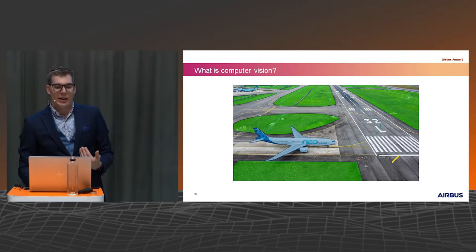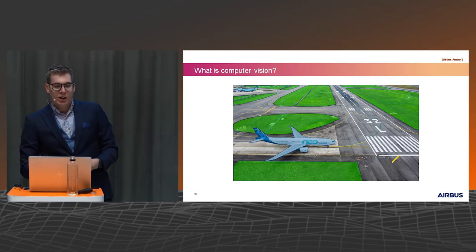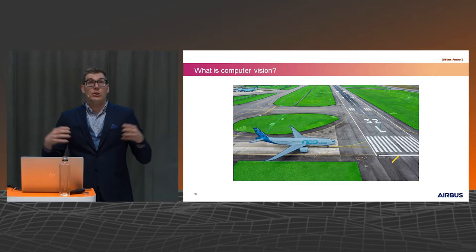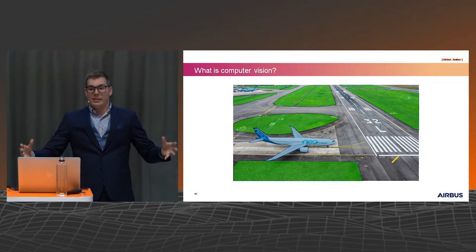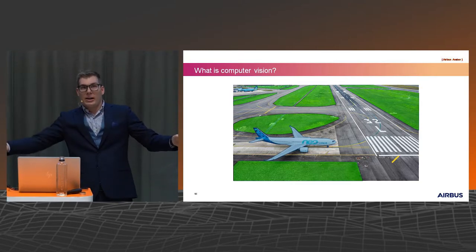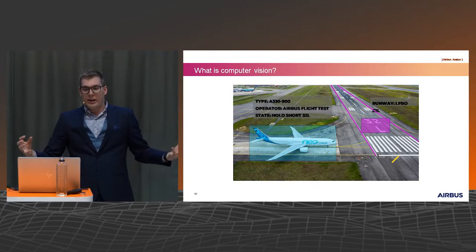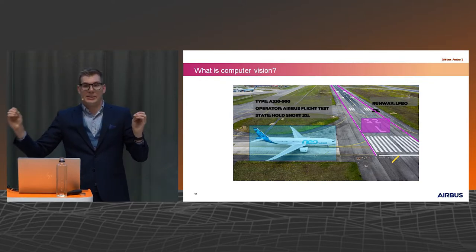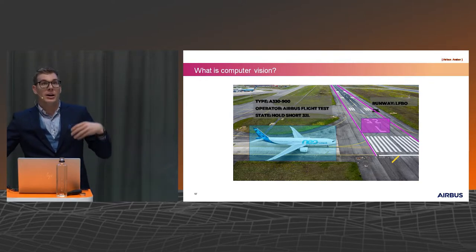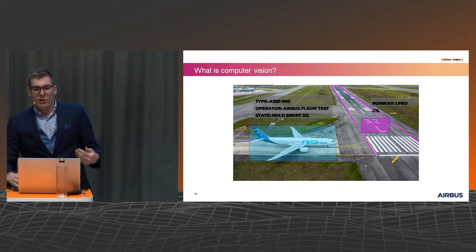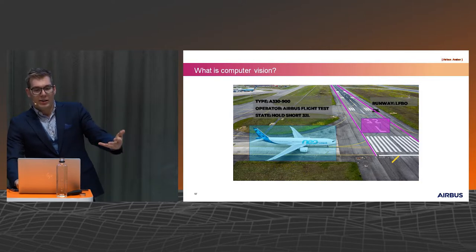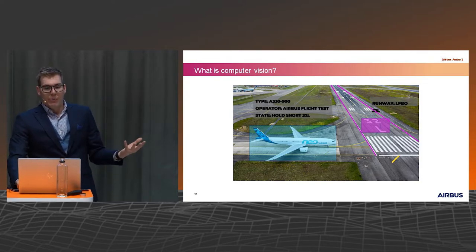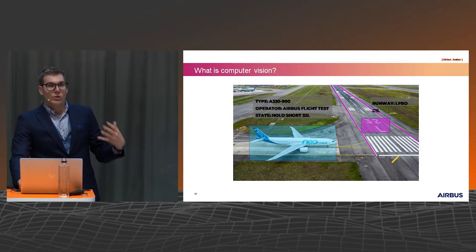There's also other information we can get out of the image. For example, we could recognise the fact there's an aircraft and where it is, recognise the aircraft type, recognise the painting on the side of the aircraft and identify that specific aircraft as belonging to Airbus. We could also recognise the runway markings and all these things.